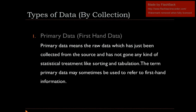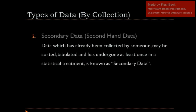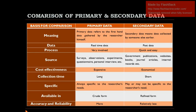Let's recap: primary data is what you have collected by hand yourself, and it has had no statistical treatment. Secondary data is what is collected from any reference or source, and has had at least one statistical treatment applied. Primary data refers to first-hand data gathered by the researcher himself. Secondary data means data collected by someone else earlier.